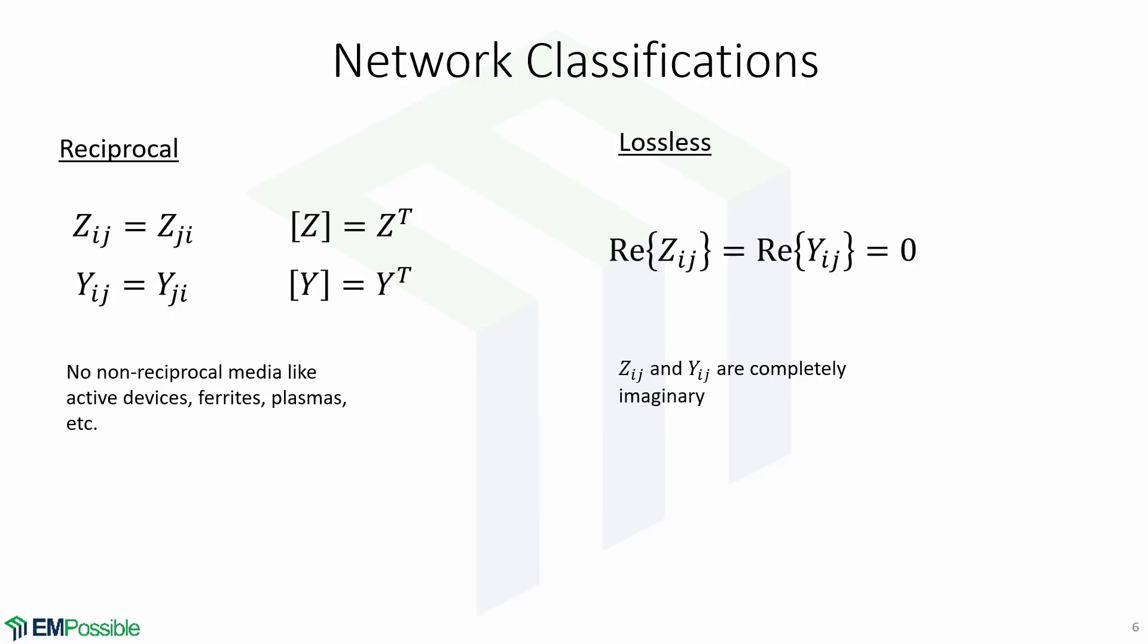Here are some useful network classifications. If the network is reciprocal, meaning that there are no non-reciprocal media like active devices, ferrites, plasmas, etc., it means that the impedance matrix Z and the admittance matrix Y are both symmetric. This means that Zij equals Zji, so the impedance matrix is equal to its transpose. The same goes for admittance, where Yij equals Yji, and the admittance matrix Y equals its transpose.